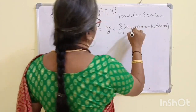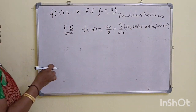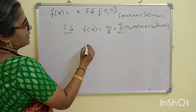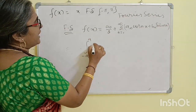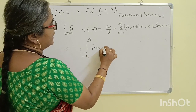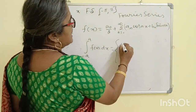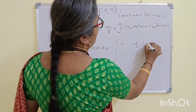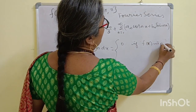Now, since the function is an odd function, we use the property that the integral from -A to A of f(x) dx equals 0 if f(x) is odd.